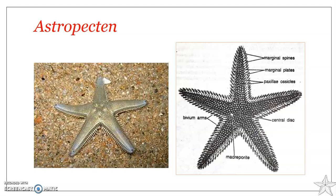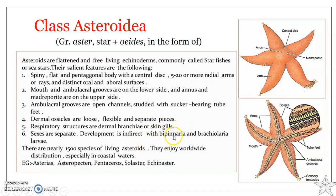Development in Astropecten is indirect — they do have a larval stage. The larva is a bipinnaria larva. Brachiolaria larva is very rarely found, while bipinnaria larva is the frequently observed larval form in asteroids. The bipinnaria larva is a free-swimming, pelagic larval stage. So in asteroids we can find bipinnaria as well as brachiolaria larvae among the species. This concludes our discussion on Class Asteroidea.